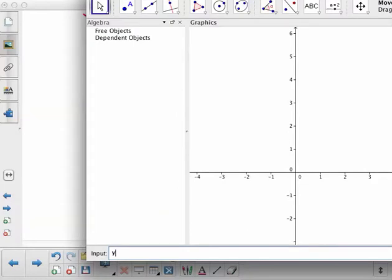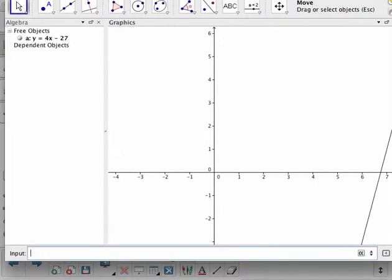So one equation was y equals 4x minus 27. And it graphs it for us. You can see it kind of over there on the right.